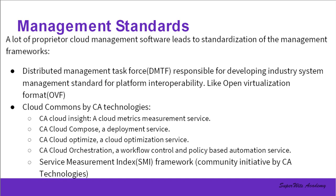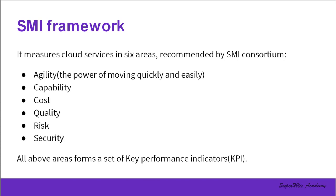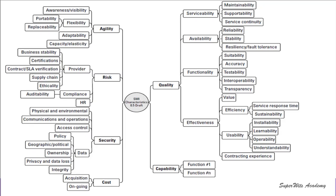The SMI framework is a community initiative by CA Technologies — the same organization that proposed the CMMI models with five different levels. The SMI framework defines and measures cloud services in six areas: agility, capability, cost, quality, risk, and security. These areas form a set of key performance indicators (KPIs) for defining cloud services. In total, there are 44 subgroups defined within the SMI KPIs, each defining a very specific performance aspect of individual cloud providers — used for standardized rating and comparison when choosing a cloud service provider.